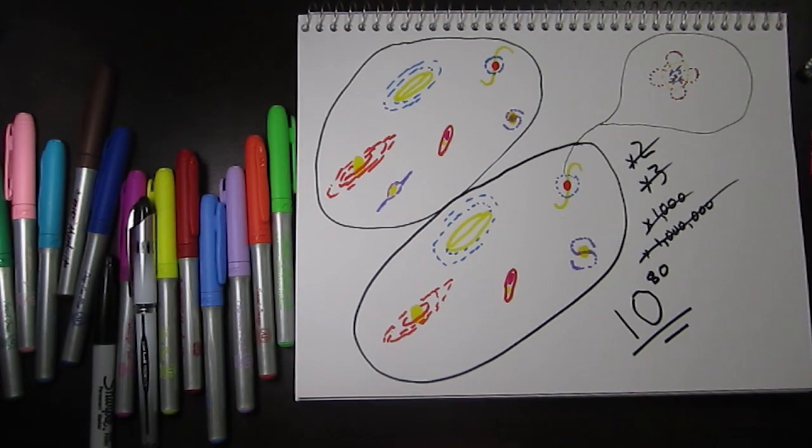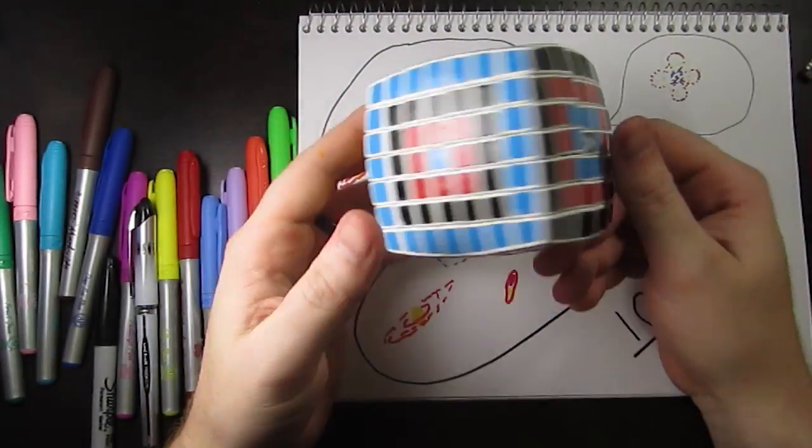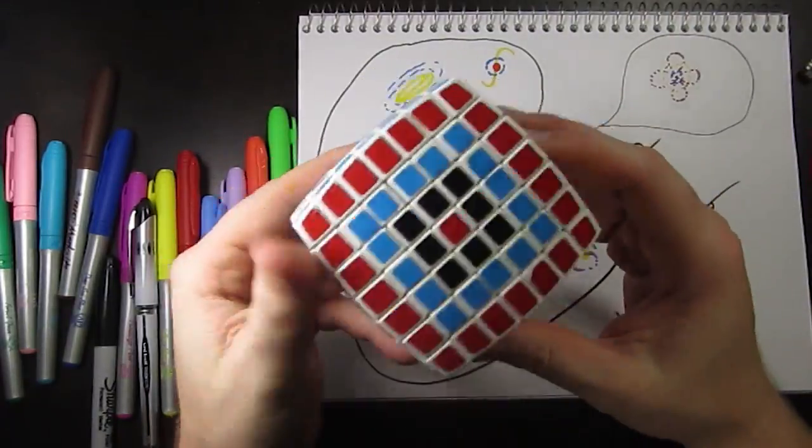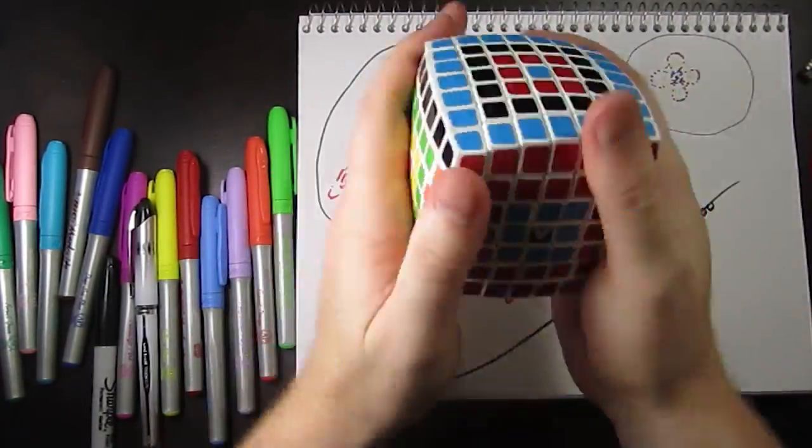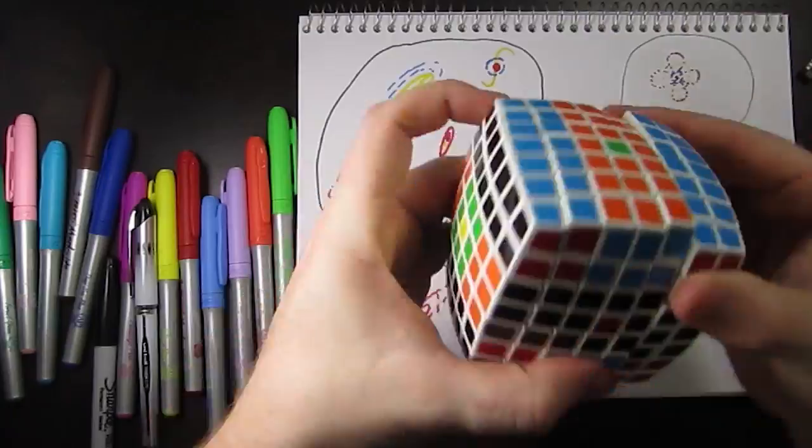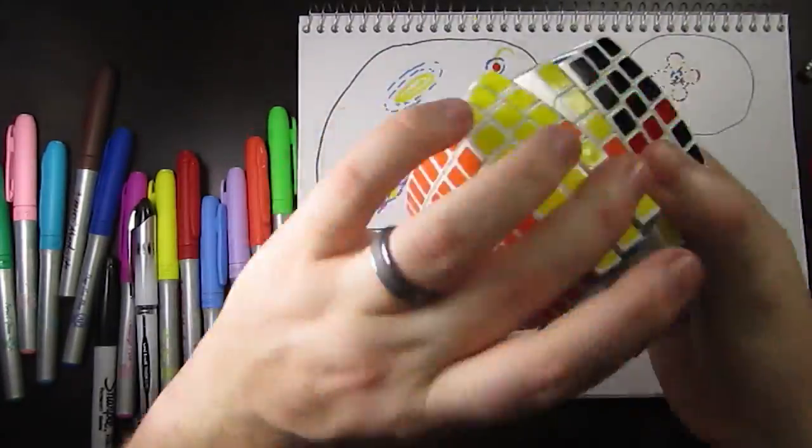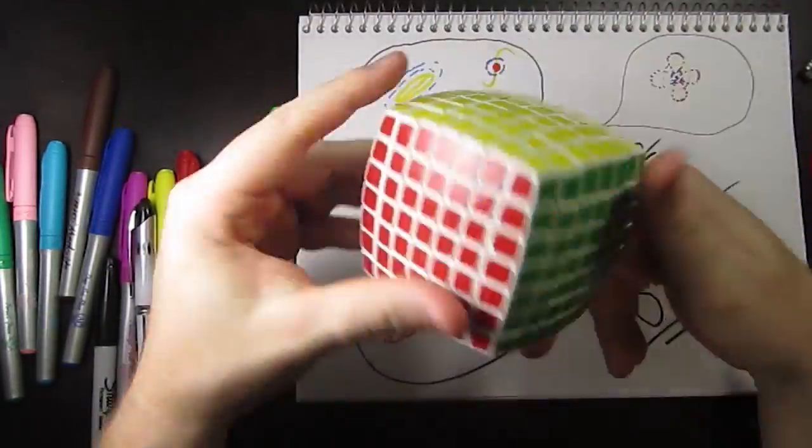So what does this tell us? This tells us that the difficulty of a puzzle is not determined solely on the number of possible permutations. If it were so, the V-Cube 7 would be impossible.